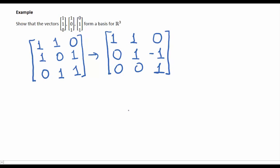So we can see that there's no free variables, so these are linearly independent. And there's no row of zeros, which means they span. So we've now shown that this is a basis for R^3.